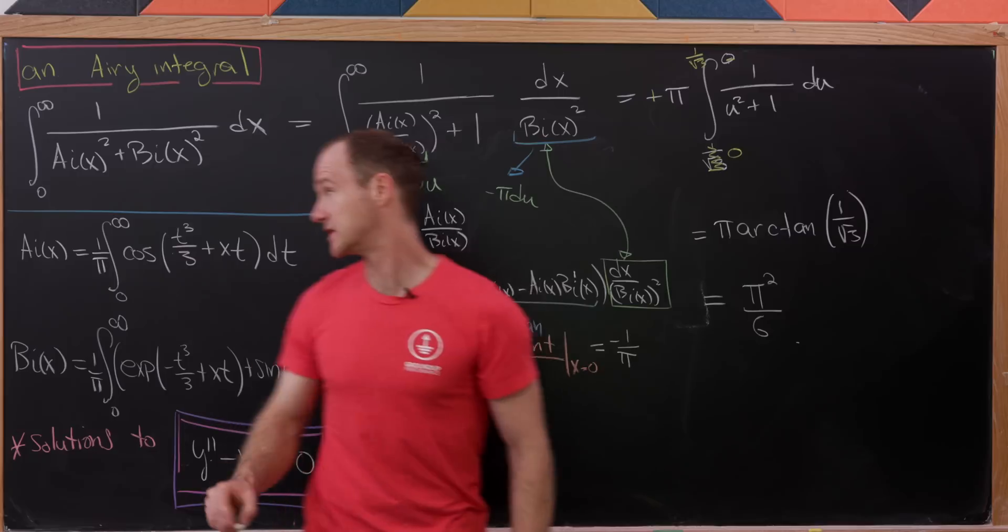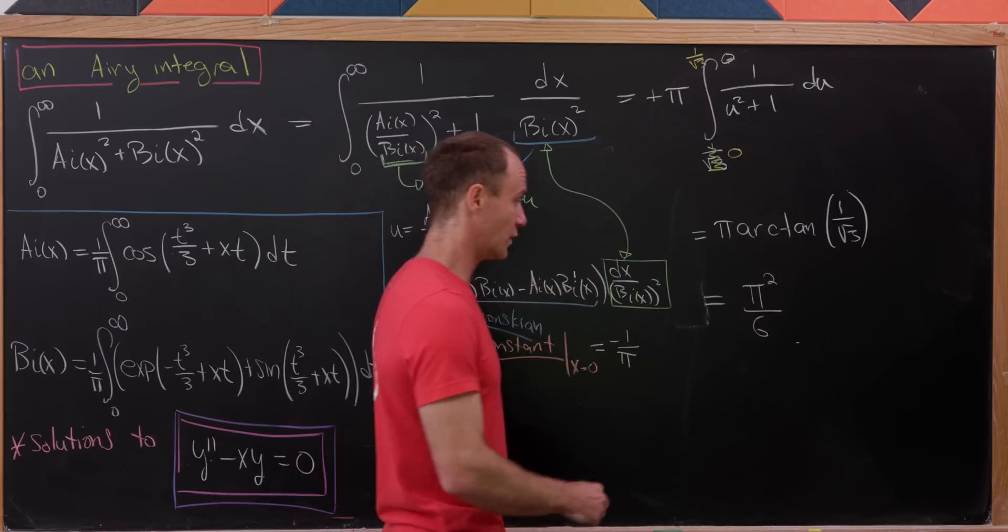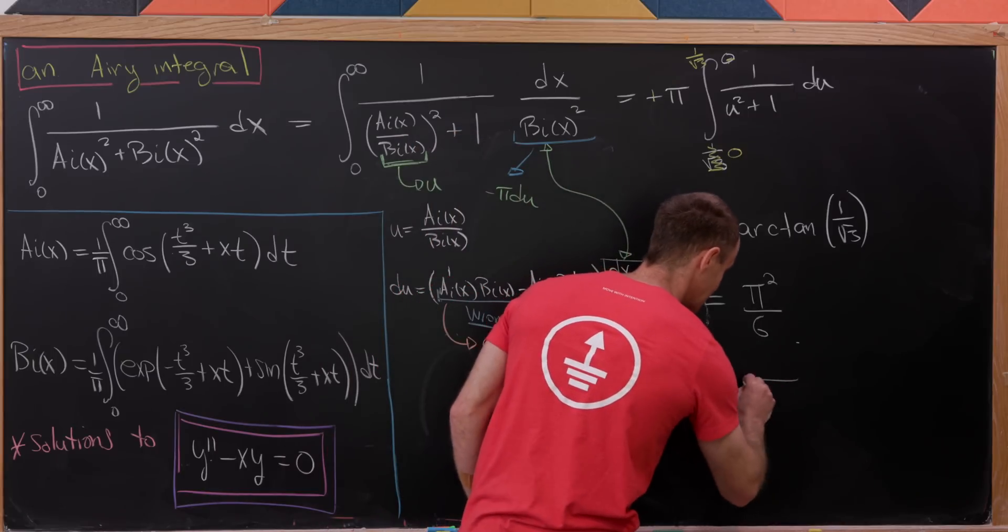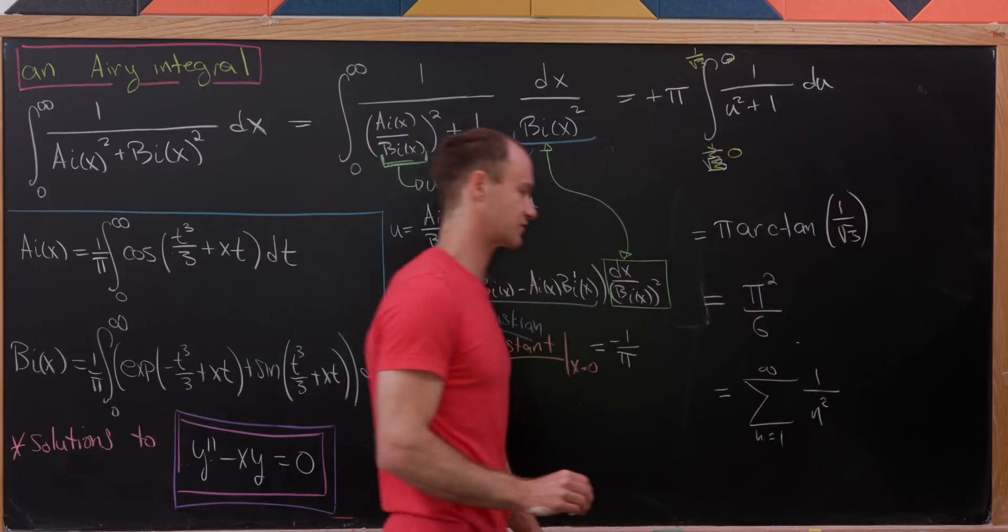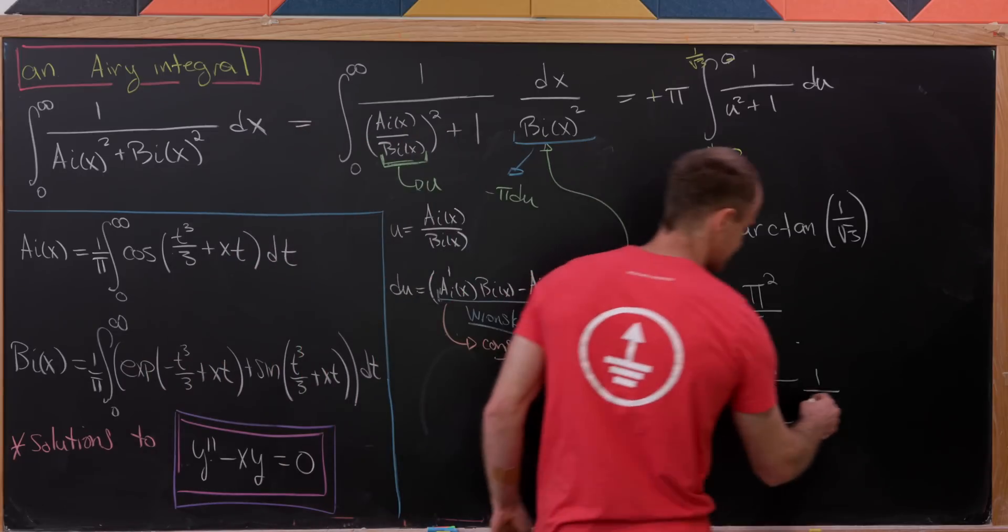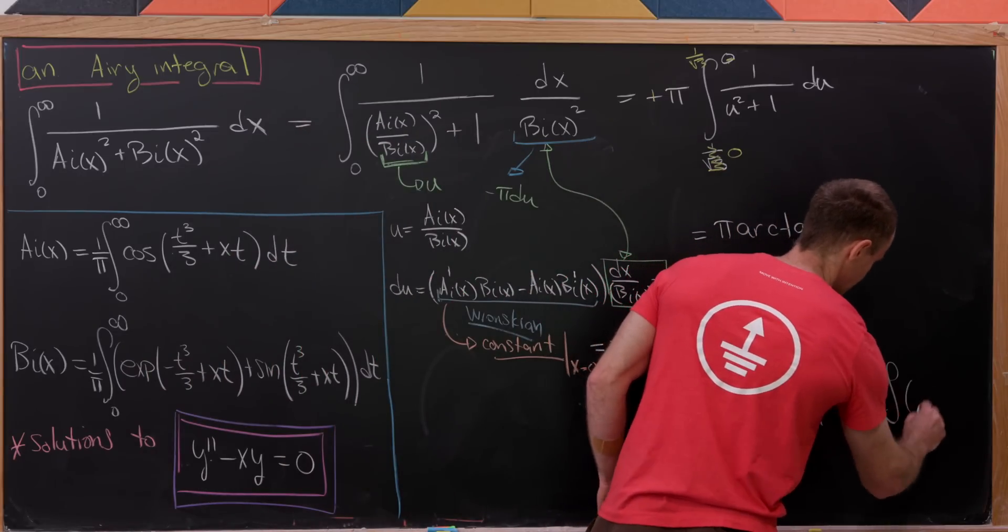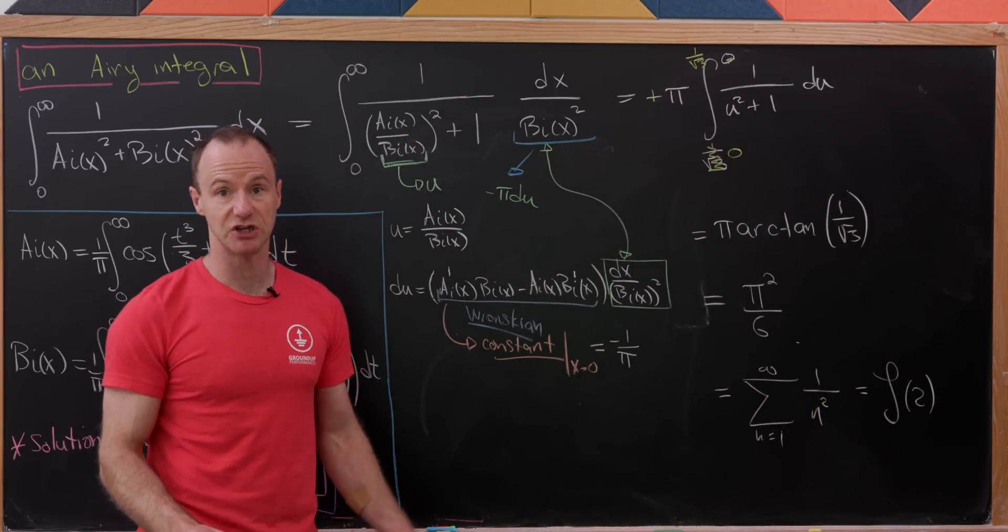Which I think is very interesting, that this integral turns into pi squared over 6, which is exactly the sum of the reciprocals of all of the squares of natural numbers. So this is just another place that this sum of the reciprocals of the squares, in other words, the zeta function evaluated at 2, shows up.